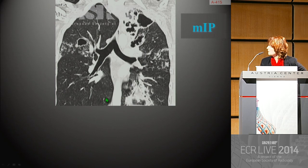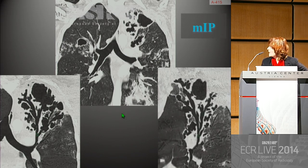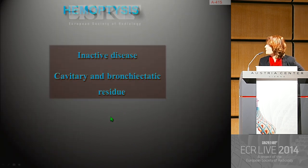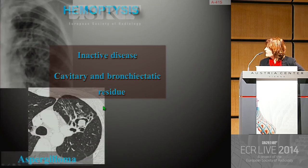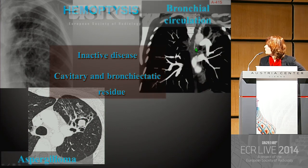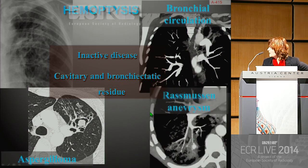Minimum intensity projection may also be useful in characterizing cavities and bronchiectasis within cicatricial collapses. Faced with hemoptysis, radiology has an important role — it mainly concerns patients with inactive disease and cavitary and bronchiectatic residue. The radiologist should be able to diagnose an aspergilloma, to describe hypertrophied systemic and non-bronchial systemic arteries, and to recognize a Rasmussen aneurysm, which may be responsible for massive hemoptysis.